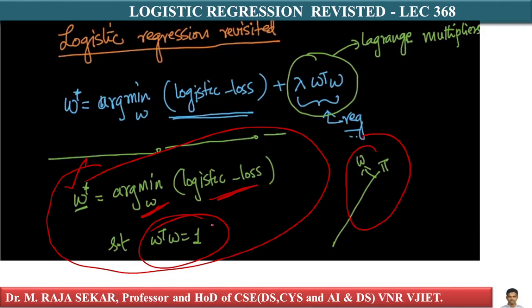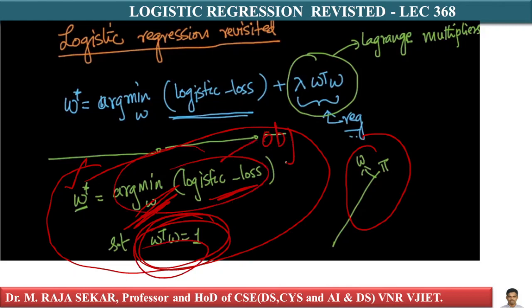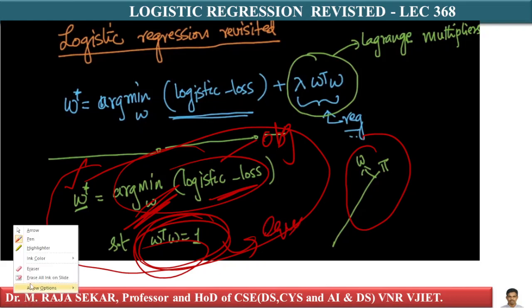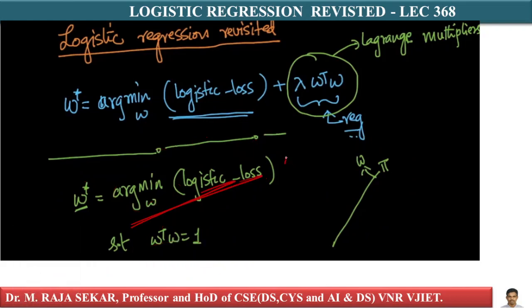If you see, this is a constraint optimization problem. We have an objective function that we are trying to minimize, and we have an equality constraint. The objective function is the logistic loss, and the equality constraint is w-transpose-w equals one.